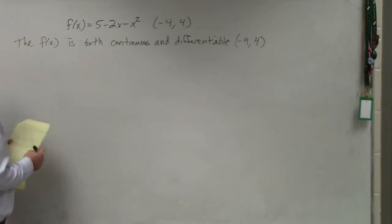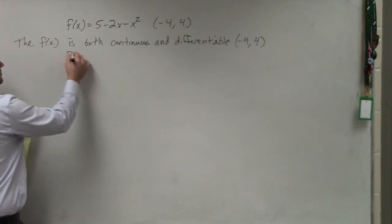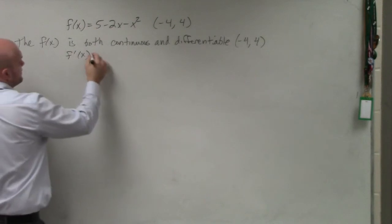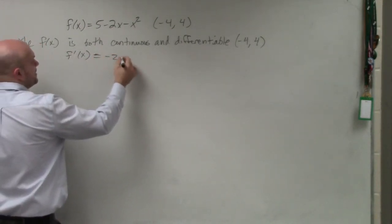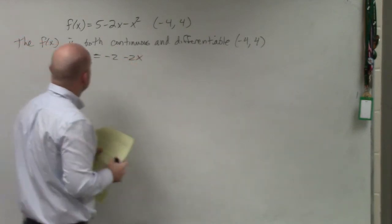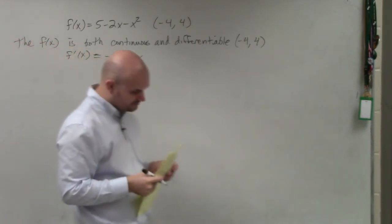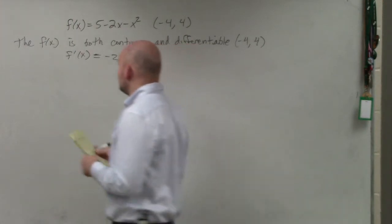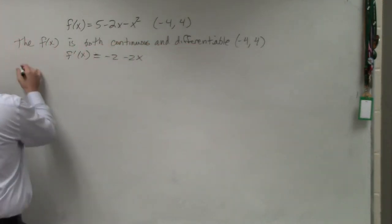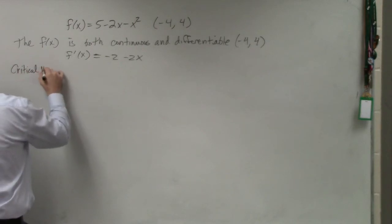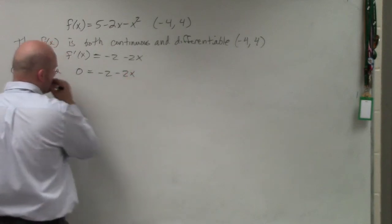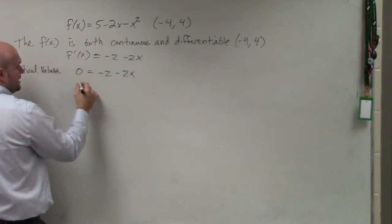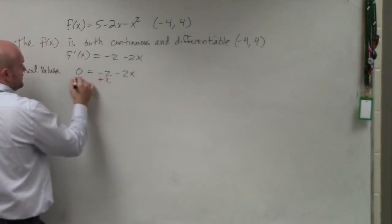The next thing is we want to find our derivative. So in this case we're going to have our derivative is negative two minus two x. And we can go ahead and find our critical values. Set zero equal to negative two minus two x, and you can go ahead and solve.